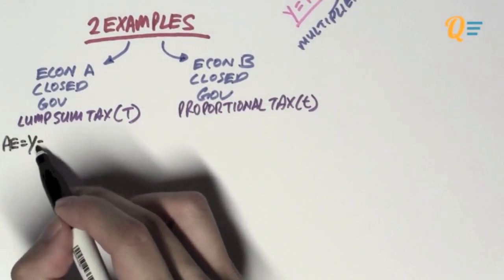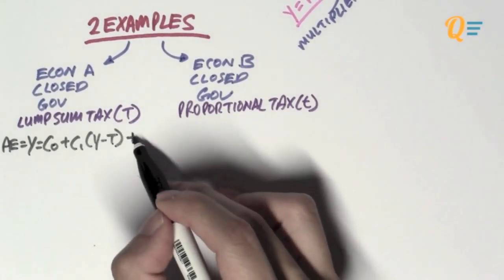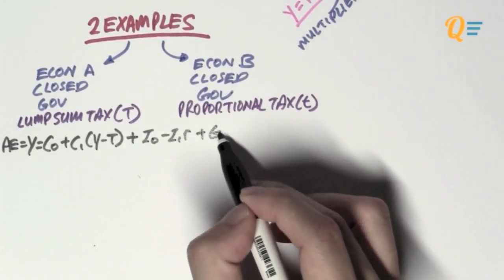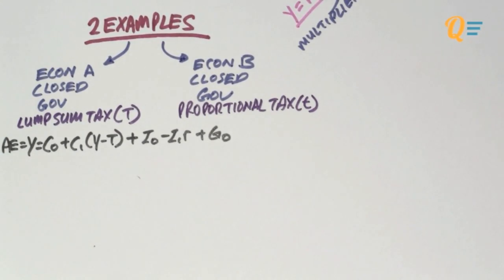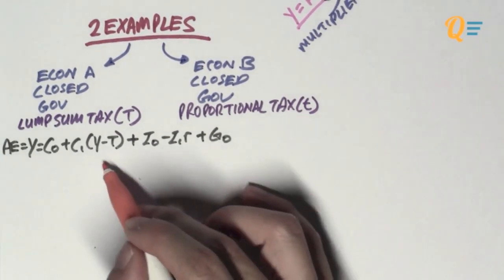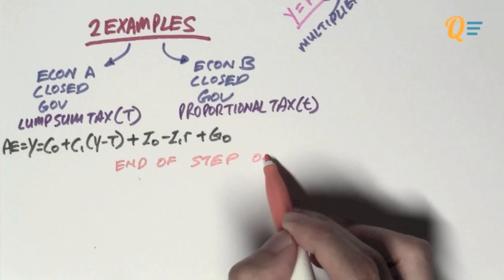So, let's start with economy A first. So, the first step, of course, is to write down your AE equation as such. So, this is my AE equation, standard one with lump sum tax. And this is actually the end of step one.